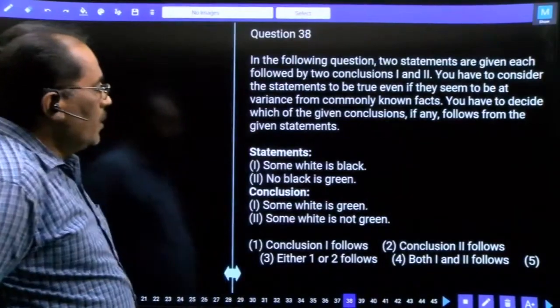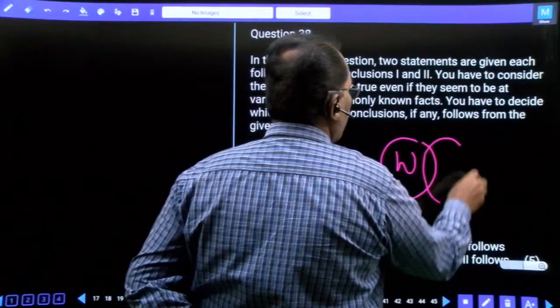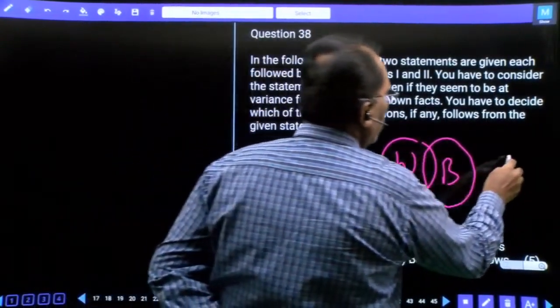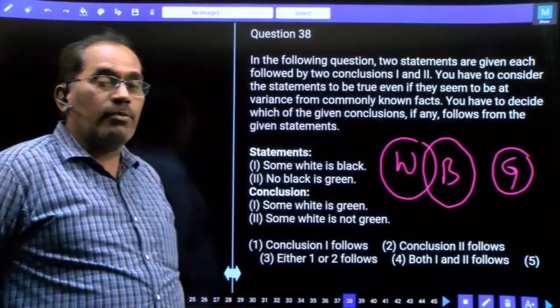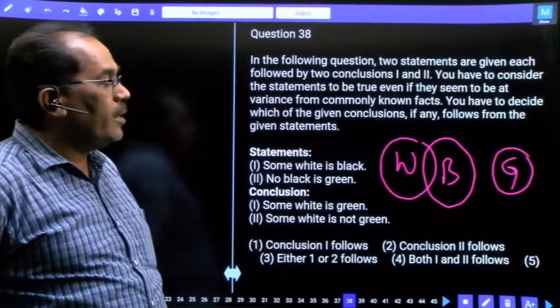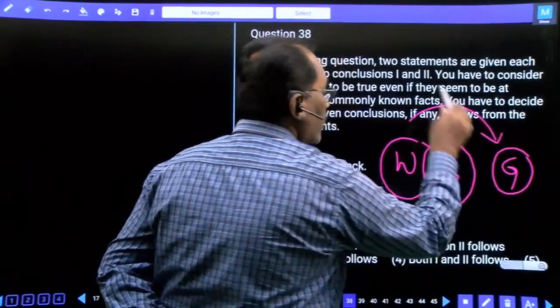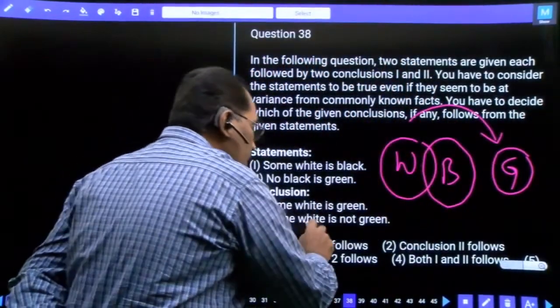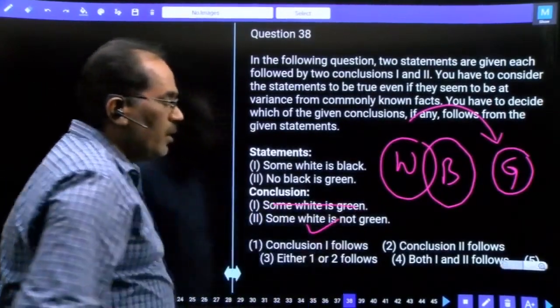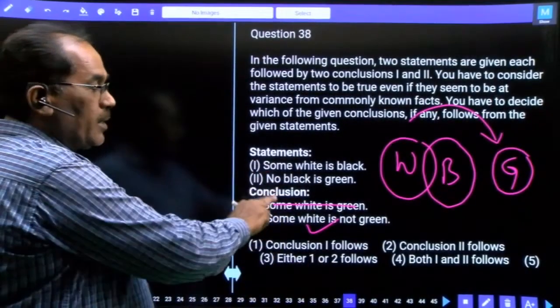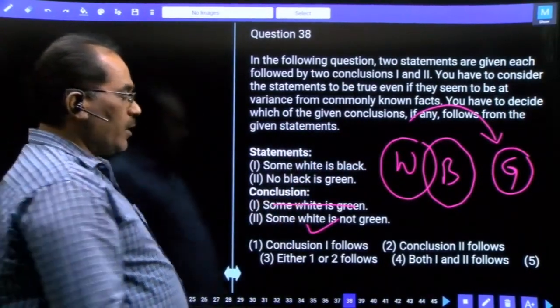Question 38, some white is black, no black is green. Conclusions: some white is green, some white is not green. If white and black are intersecting, and black is not green, then some white is not green can be a definite answer. That is second option. Only conclusion two follows, our answer.